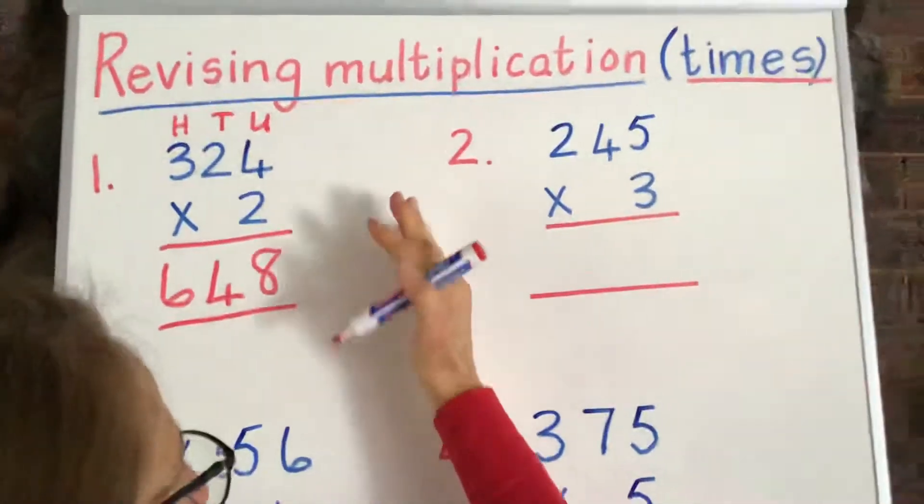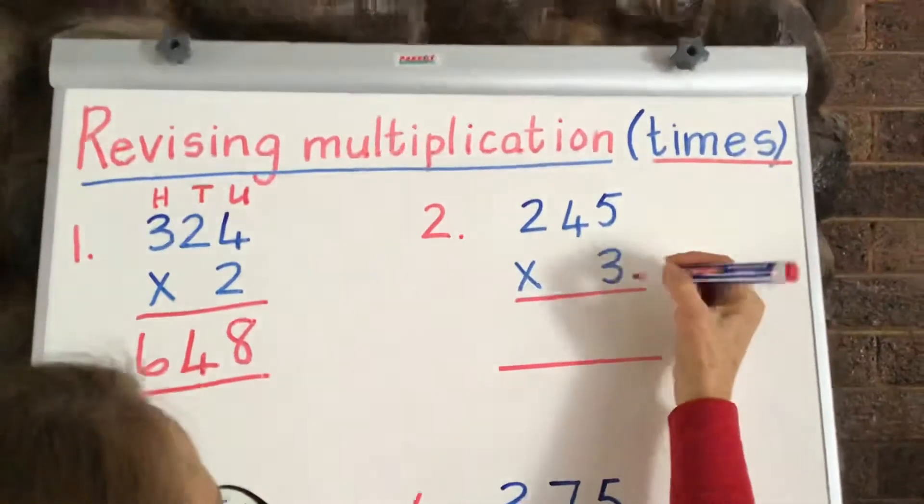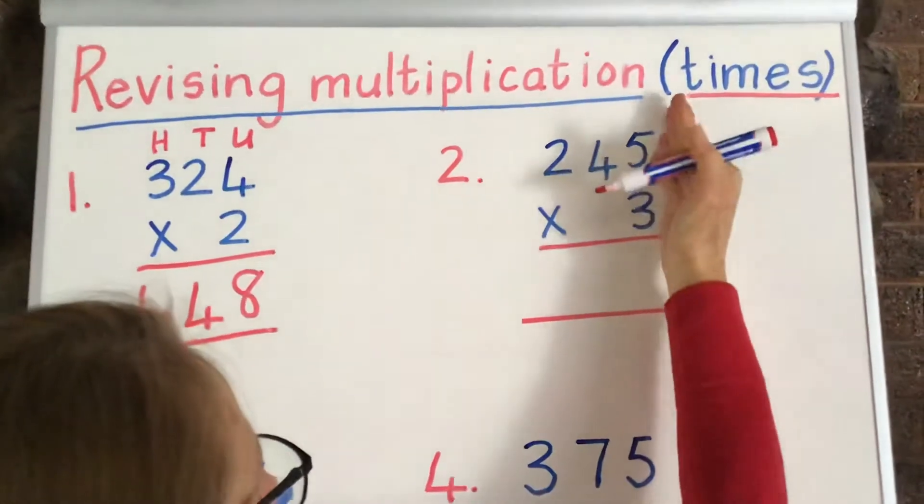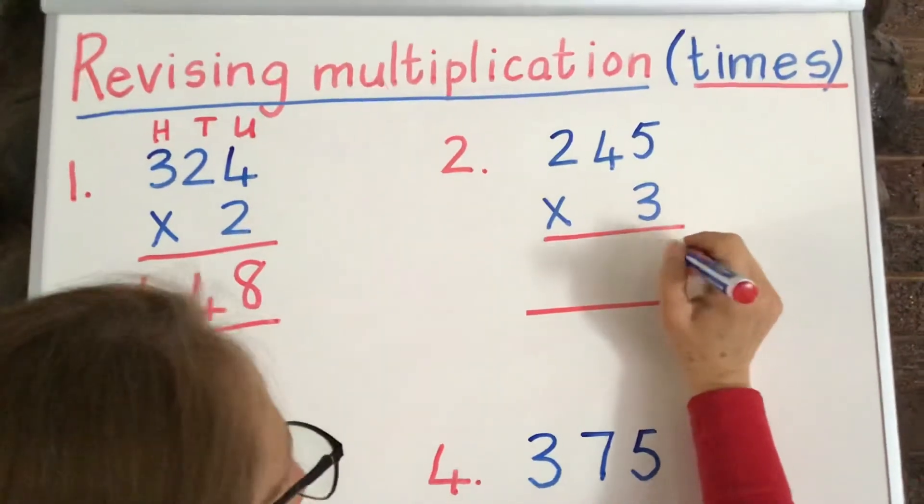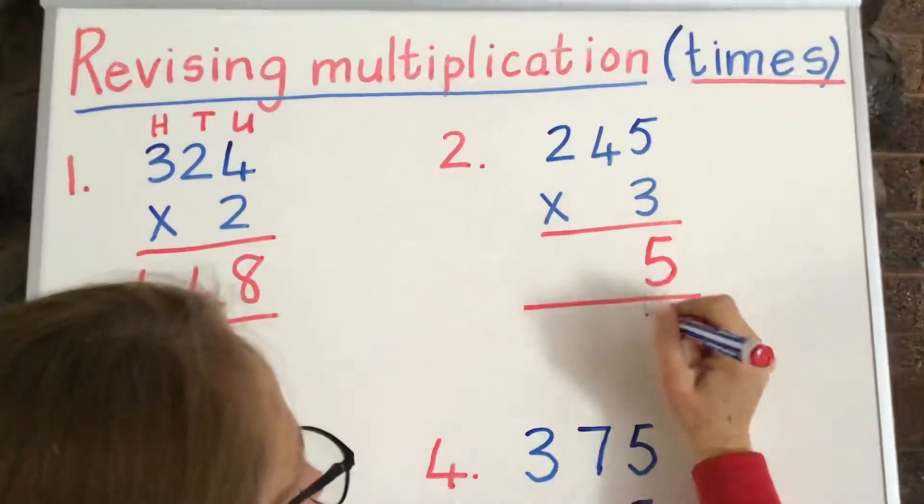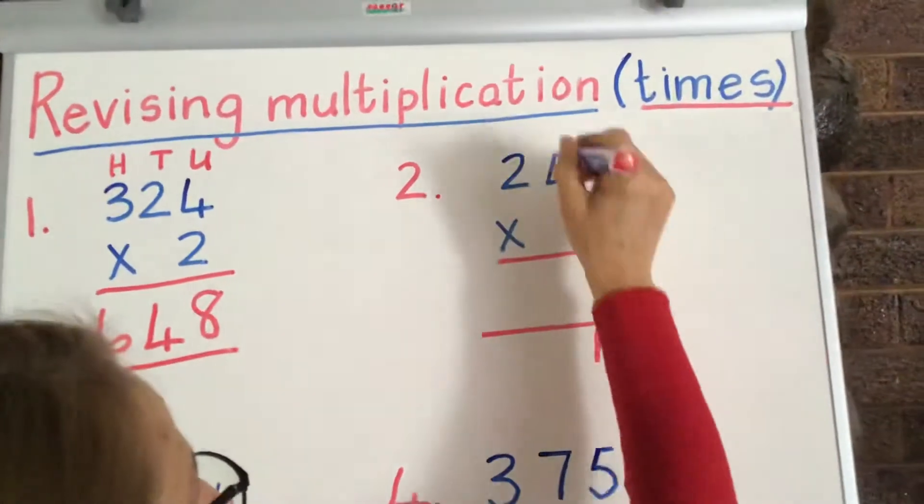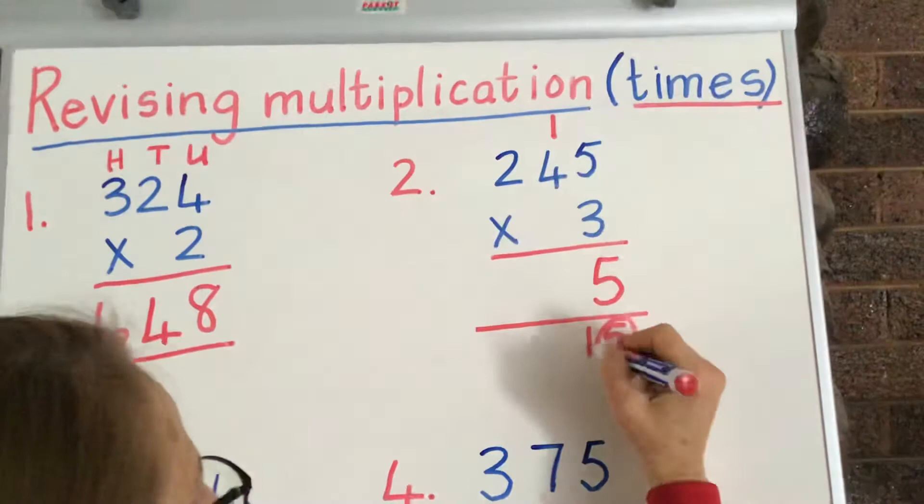Now let's move to number 2, where we're going to have to carry over. Have a look, starting again with the units. Right, 3 times 5 is 15. Put down the 5 of the 15, and if you want to, you can actually write it down there, and then put the unit down there. Alright, the 10 goes up at the top there, that one.